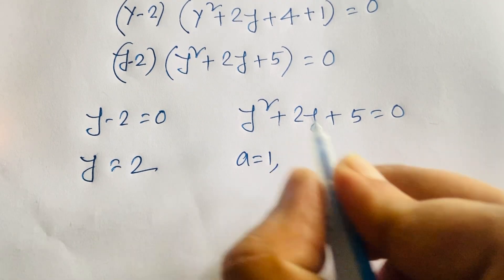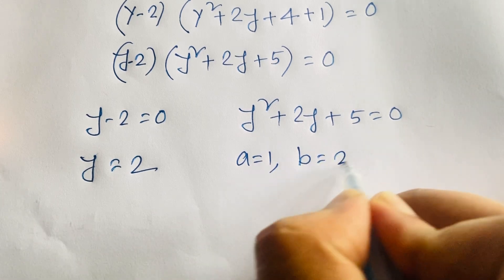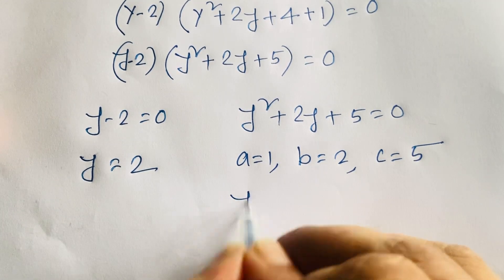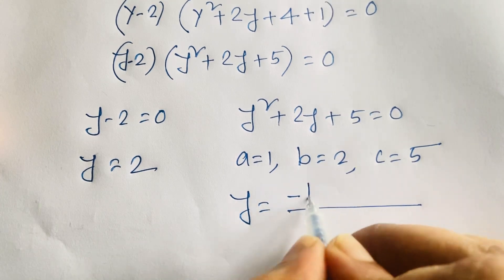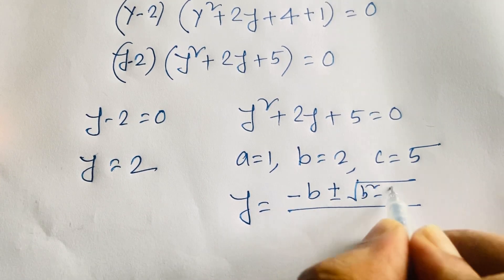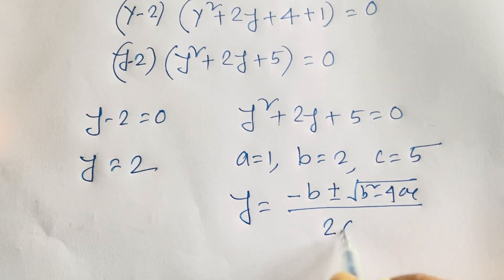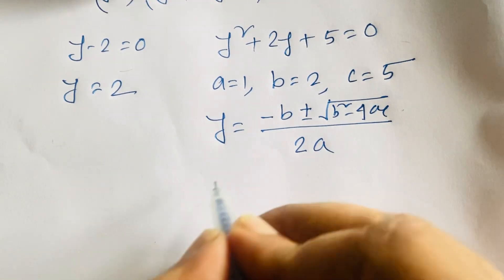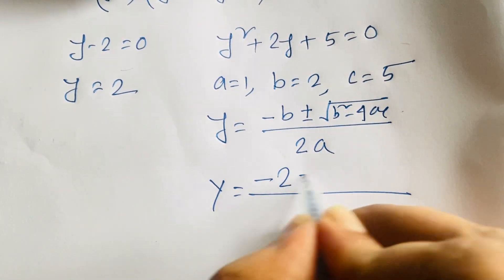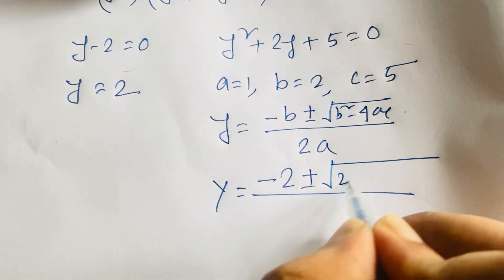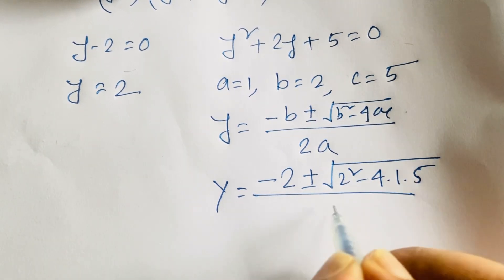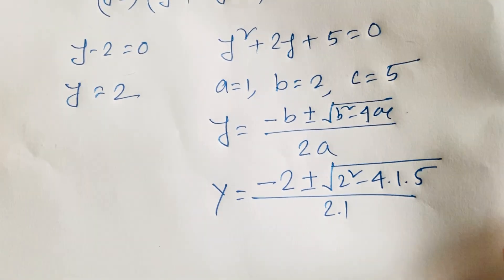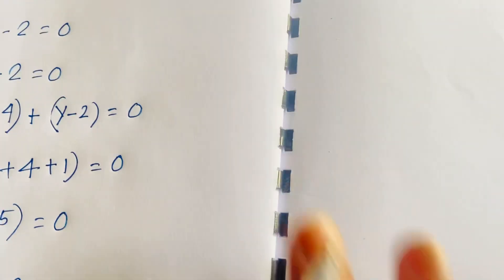Using the quadratic formula, y equals minus b plus or minus square root of (b² minus 4ac) over 2a. With b equals 2, a equals 1, and c equals 5, we get y equals minus 2 plus or minus square root of (4 minus 20) over 2, which is y equals minus 2 plus or minus square root of minus 16 over 2.